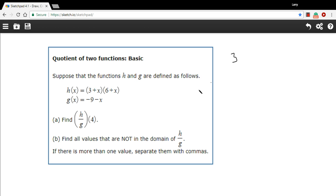Let me just write this set of functions as a quotient. I'm going to put h on top because we're finding h over g. So this is 3 plus x and 6 plus x. I don't really need to do anything. No multiplying out is necessary here. And this is over negative 9 minus x.